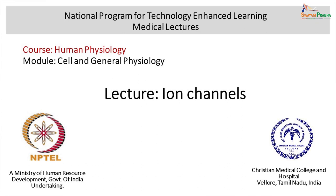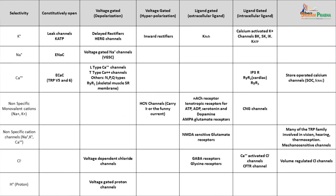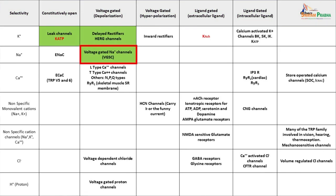We will continue our discussion on the different ion channels that are present in the body. In the last module, we discussed a simple tabular column showing the different ion channels on one axis and the different ways in which they are gated on the other axis. This axis shows their selectivity and this axis shows their gating. We have also covered the important ion channels required for the neuronal action potential.